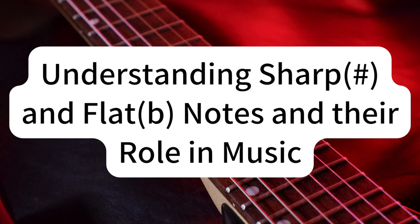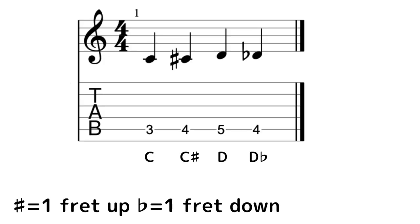Let's now shift our focus onto sharp and flat notes, which fall under a concept in music known as accidentals. Sharp and flat are two types of accidentals, with a sharp sign indicating an increase in pitch by a half-step and a flat sign signifying a decrease by the same measure. On the guitar, a half-step is equivalent to moving by one fret. For instance, if we take the note C and raise it by a half-step, we achieve C-sharp. Conversely, lowering the note D by a half-step yields D-flat. C-sharp and D-flat are termed enharmonic equivalents, which simply means they are different names for the same pitch.